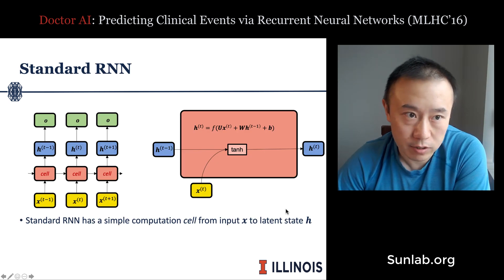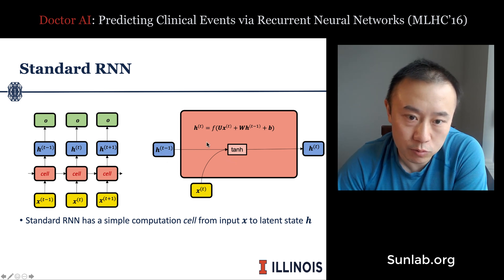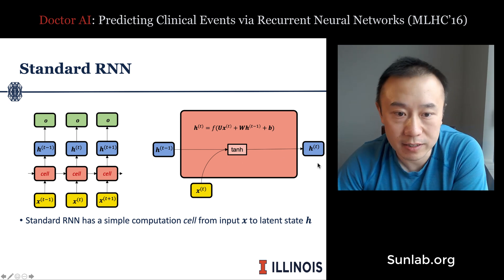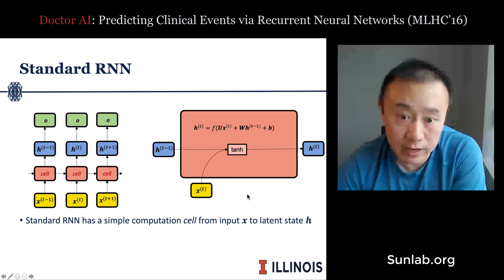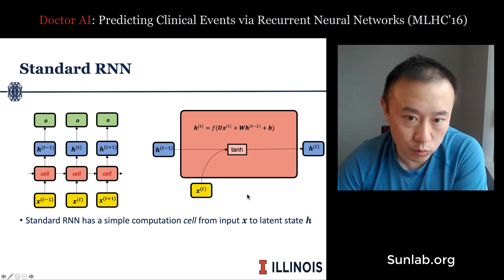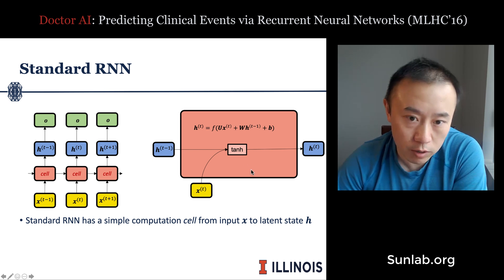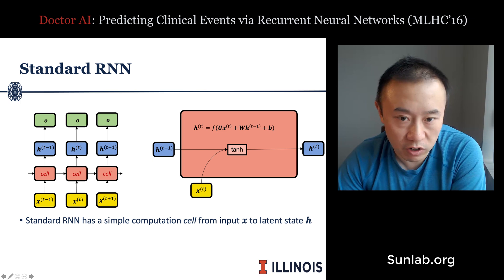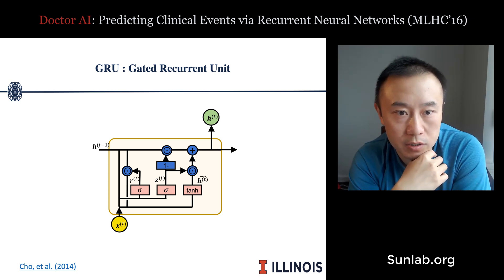Looking at the structure of a basic RNN cell: you take input x_t at timestamp t and the previous hidden state h_{t-1}, pass them through an activation function like tanh, and get the hidden state h_t. This is a naive implementation of RNN that has limitations such as the vanishing gradient problem, so people have proposed more sophisticated alternative modules with better training properties.